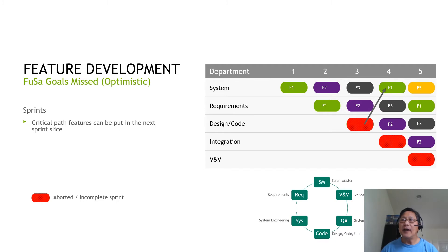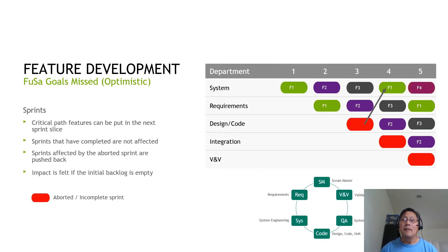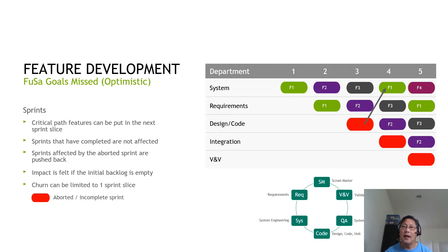If F1 has missed requirements, those need to be repeated. The impact is felt if the initial backlog is empty. In the optimistic scenario, churn can be limited to only one sprint slice.